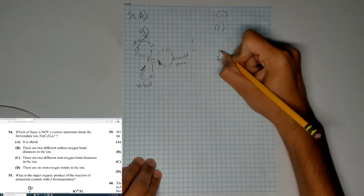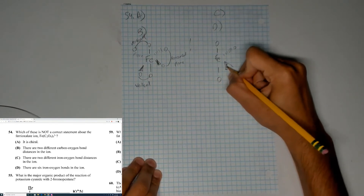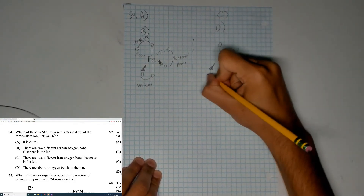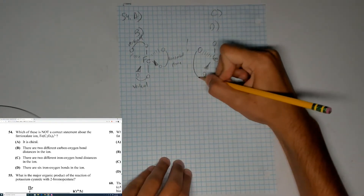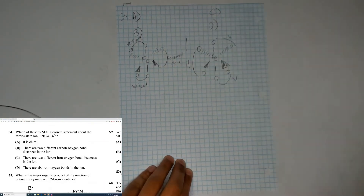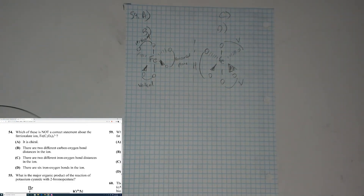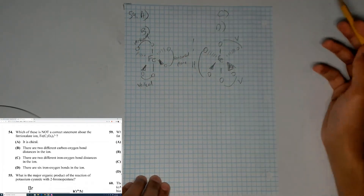Whenever you have three bidentate ligands together, the complex is chiral. If you use molecular model kits to experiment, you'll find the two forms are non-superimposable mirror images — they won't fit into each other regardless of orientation. That's how the chirality works here.